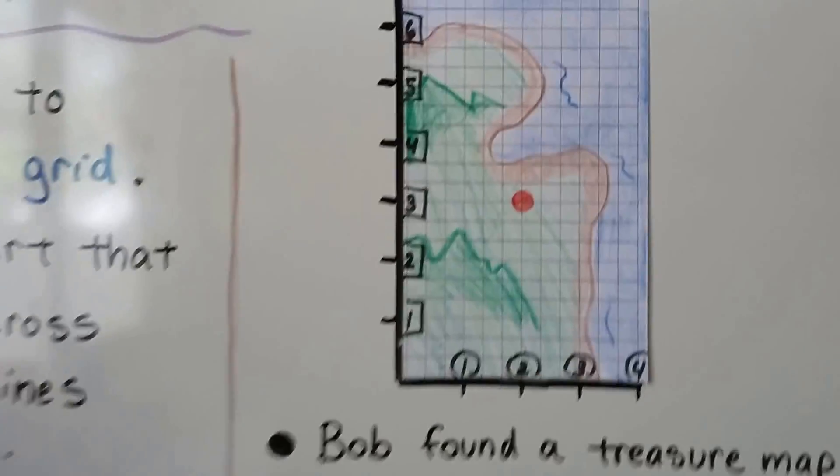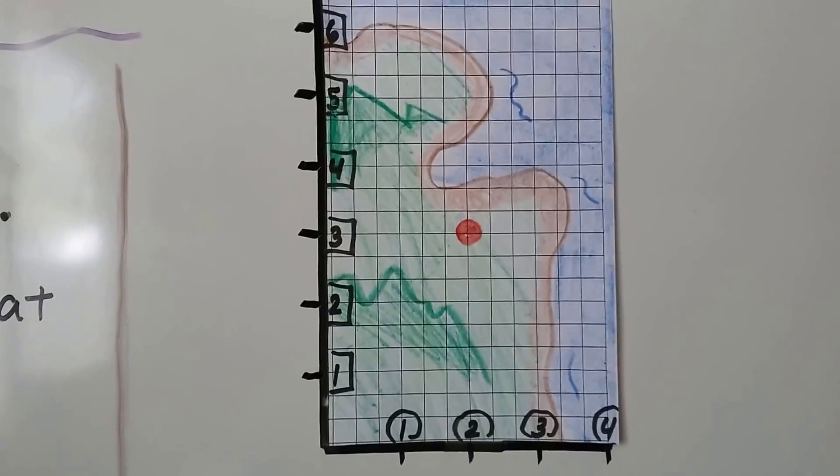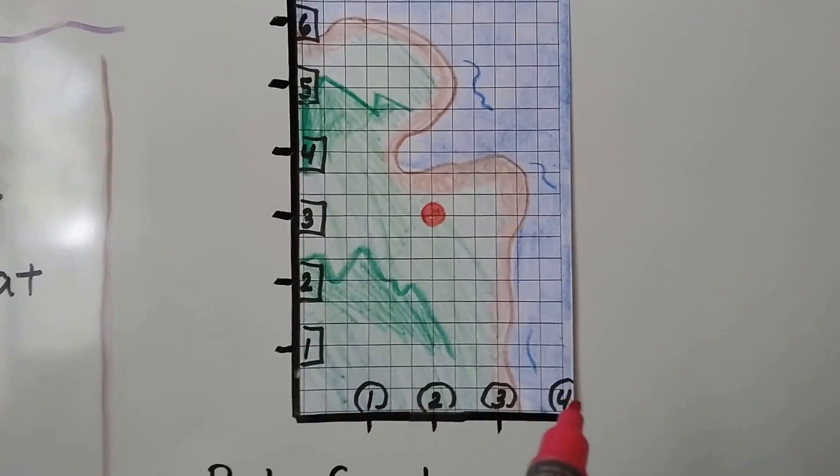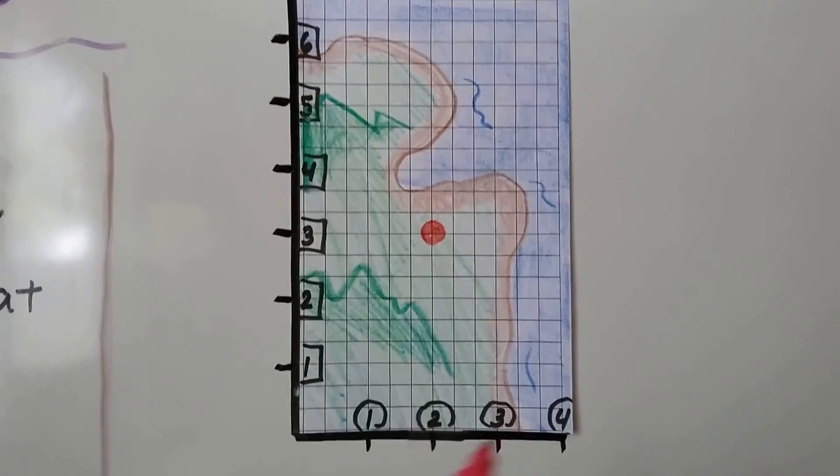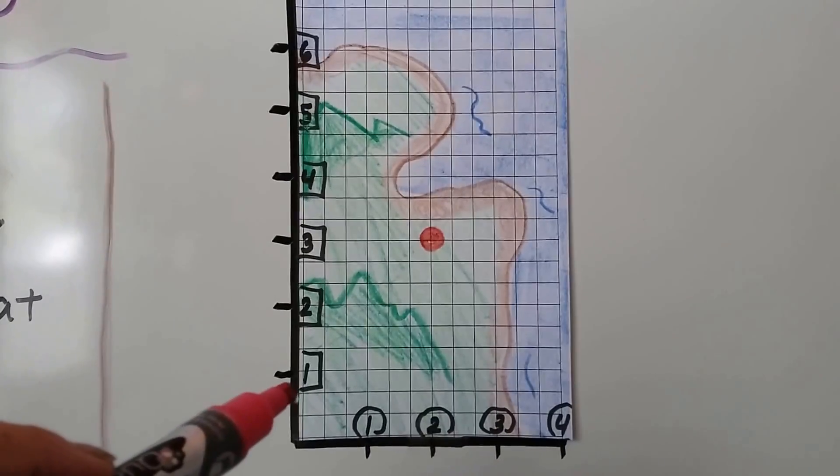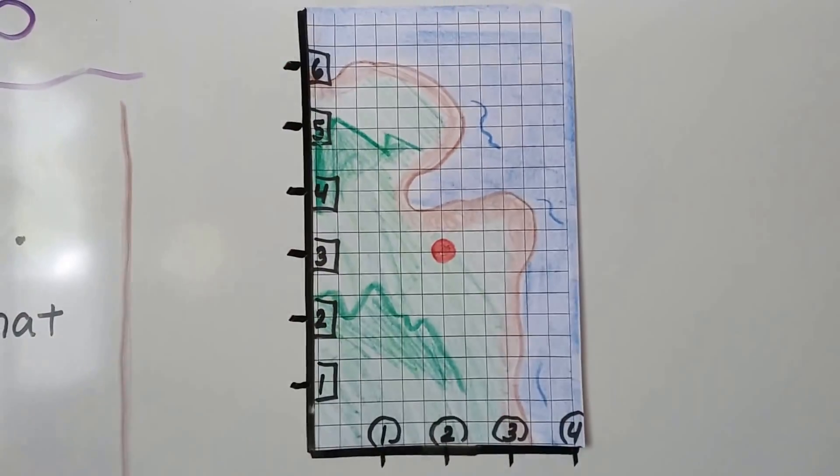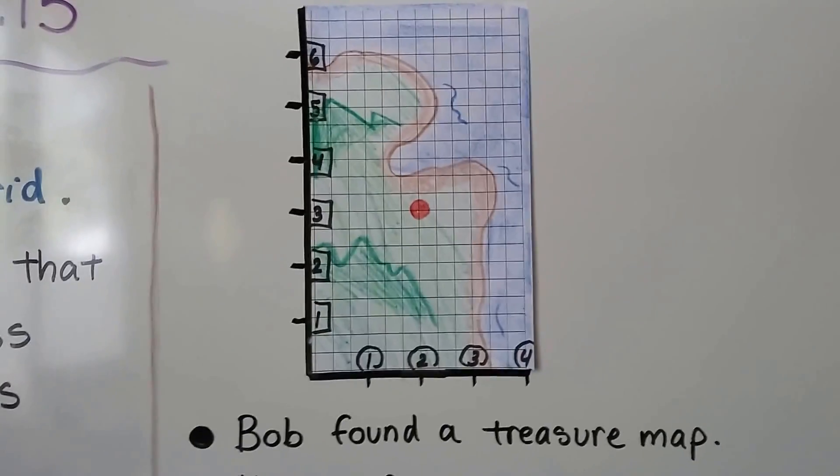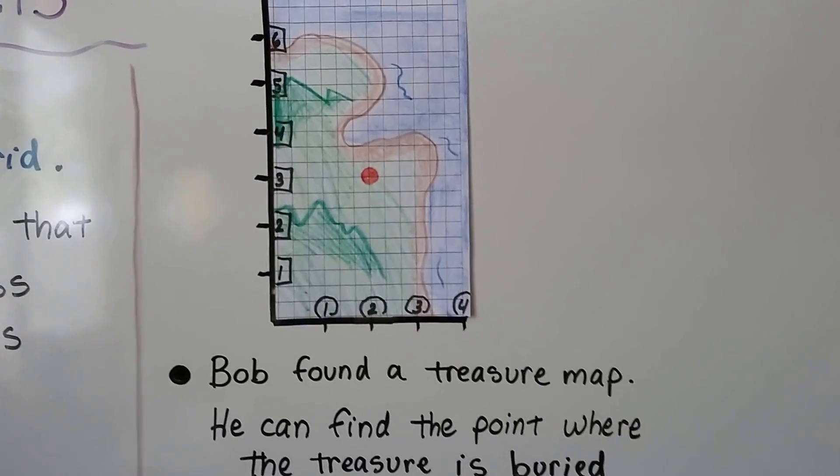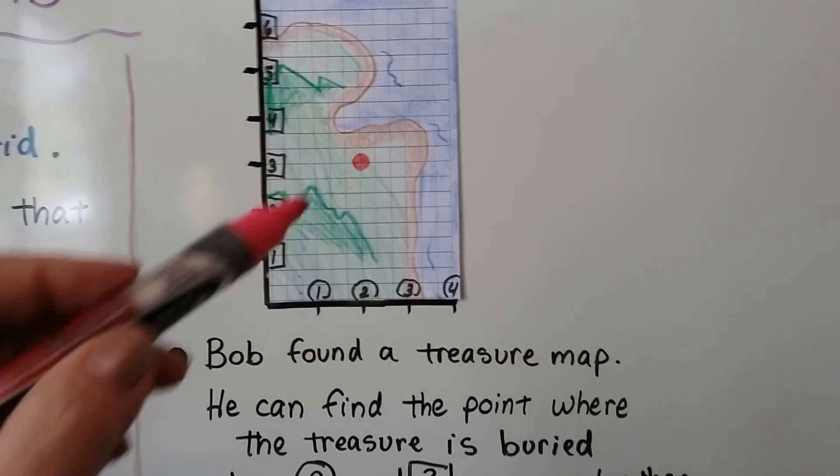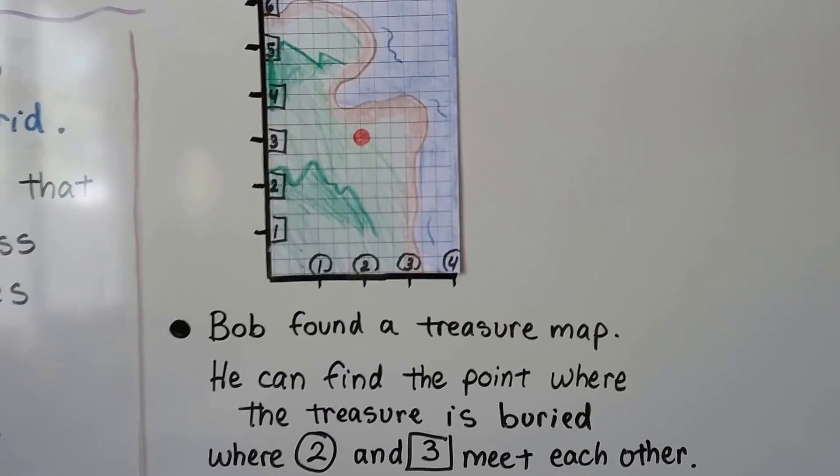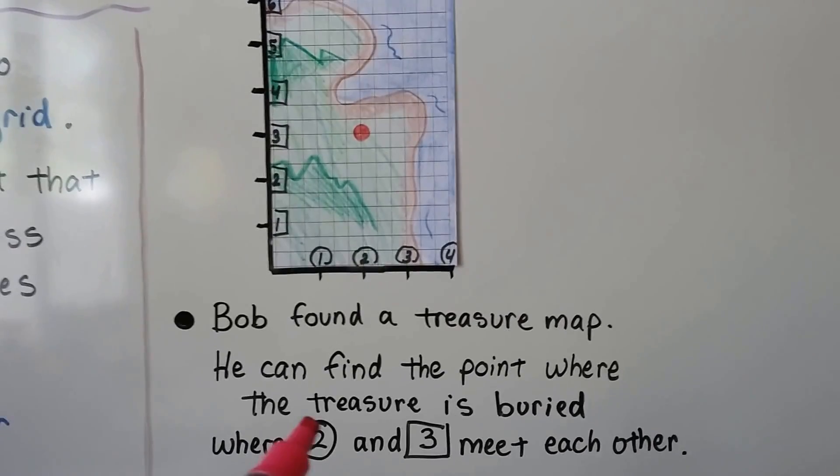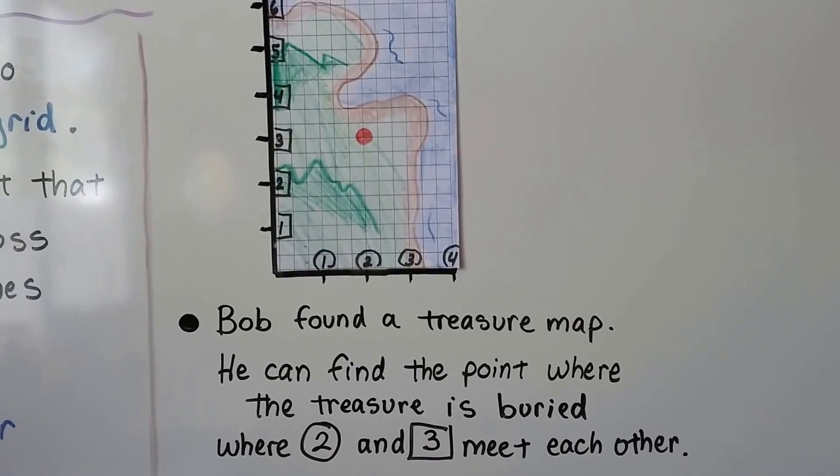Take a look at this. We have a treasure map. We have numbers in circles along the bottom going across, and we have numbers in squares going up. Bob found a treasure map and he can find the point where the treasure is buried at this red dot, where the 2 in the circle and the 3 in the square meet each other.